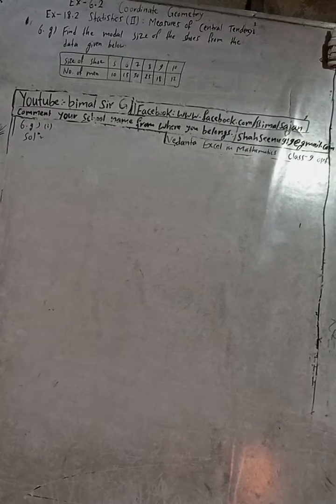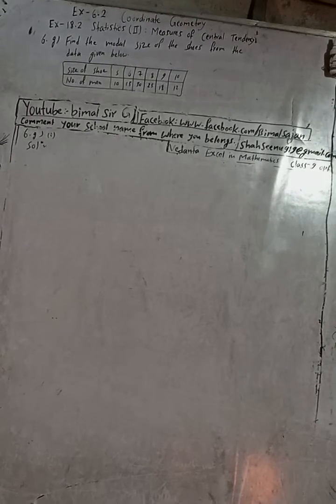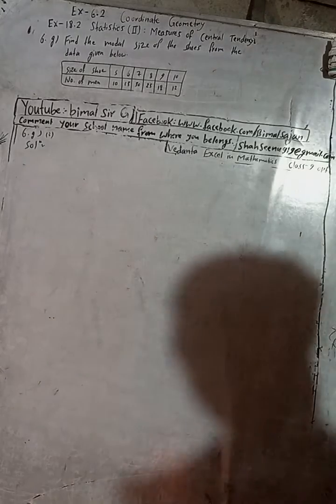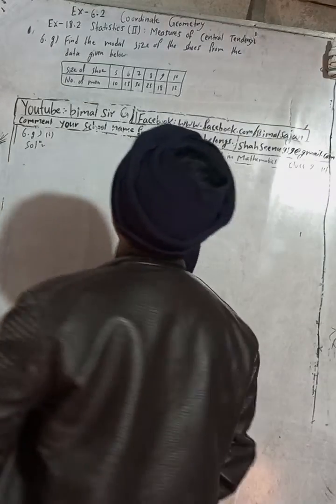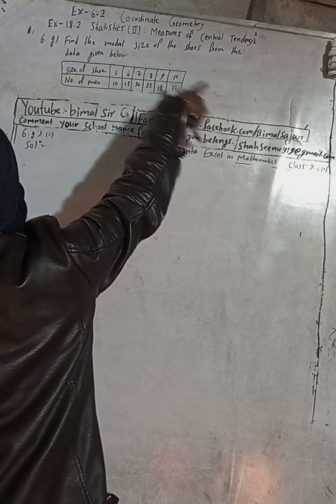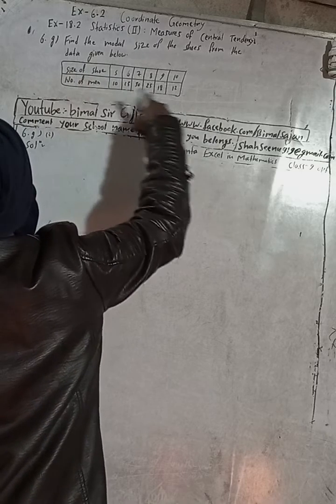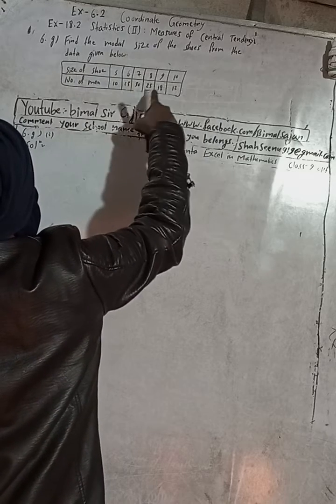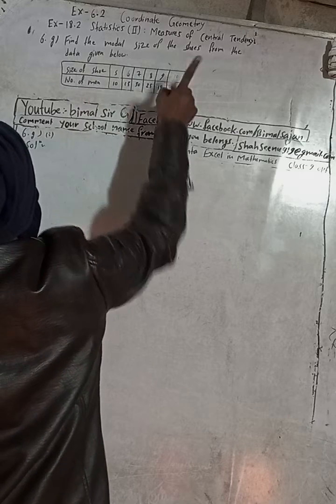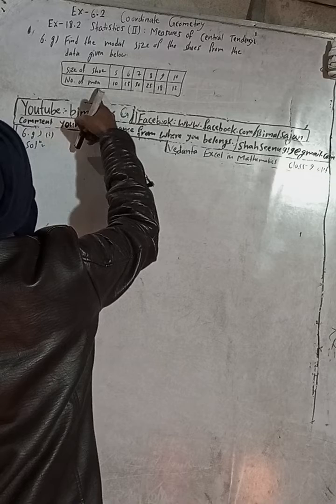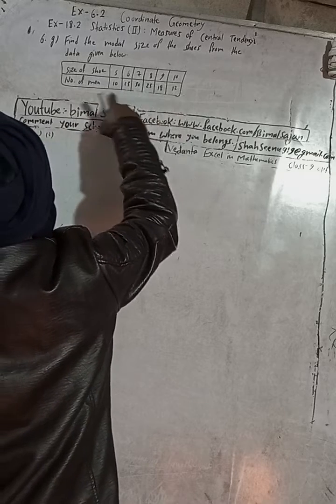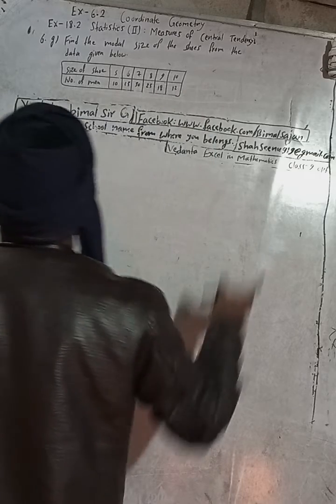Okay, this is question number 6g. The question is: find the modal size of the shoes from the data given below. So this is the data given here. Size of the shoe is 5, 6, 7, 8, 9, and 10. Number of men: 10, 15, 30, 25, 18, and 12. These are all the number of men. So now we have to find the modal size of the shoes.